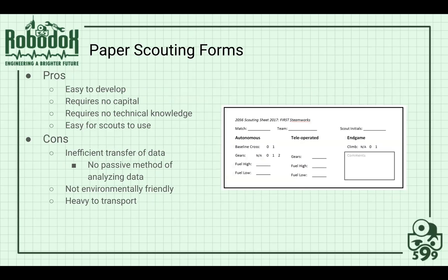Paper scouting forms are the most simple to design and, in my opinion, the least efficient to use. They're easy to develop — you can design one within a single hour using a Google Doc, print it out, and use it at every competition. You don't have to worry about internet connection or capital. However, it is inefficient because you have to transfer the data actively, compile averages, and communicate it to leads — otherwise all you have are sheets of data not accumulated by team into a single sheet.